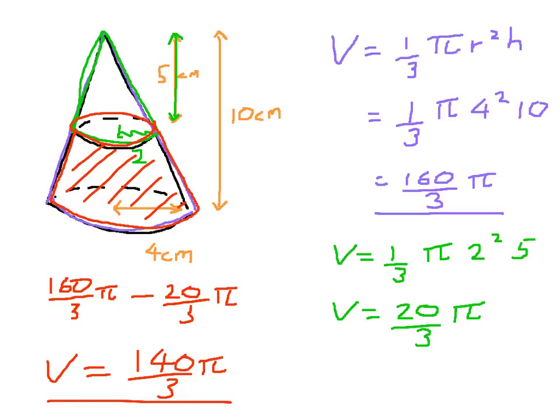And you could do that on a calculator to get a more sort of numerical answer without the pi. And because pi is roughly three, those threes are roughly going to cancel. You're going to have roughly 140 cubic centimeters.